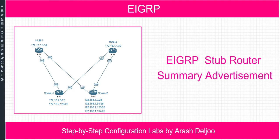In this video I am going to show you how we can configure EIGRP stub router for advertising summary routes. We have a similar scenario as the previous video. R1 and R2 are hub routers and R3 and R4 are spoke routers. I want to configure EIGRP stub with summary advertisement capability, meaning that only summary routes can be advertised and other connected networks cannot.